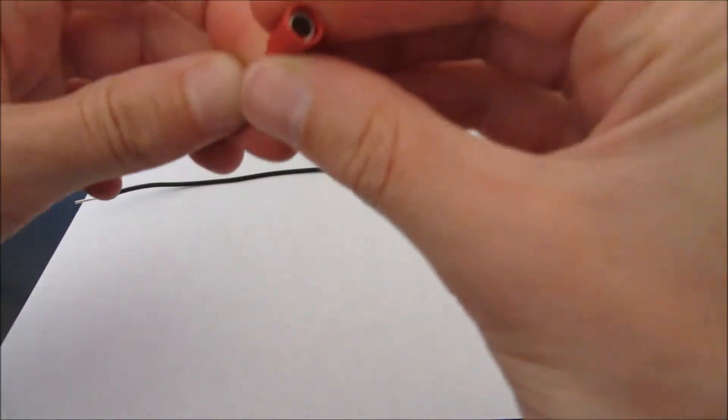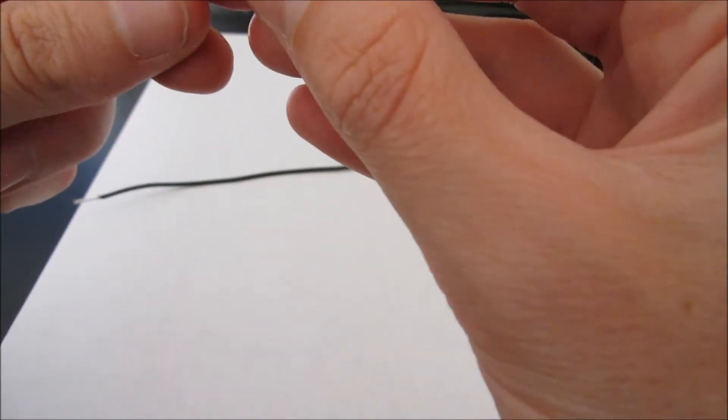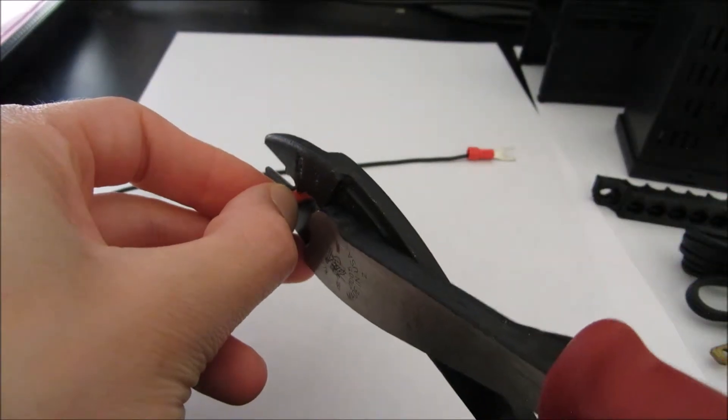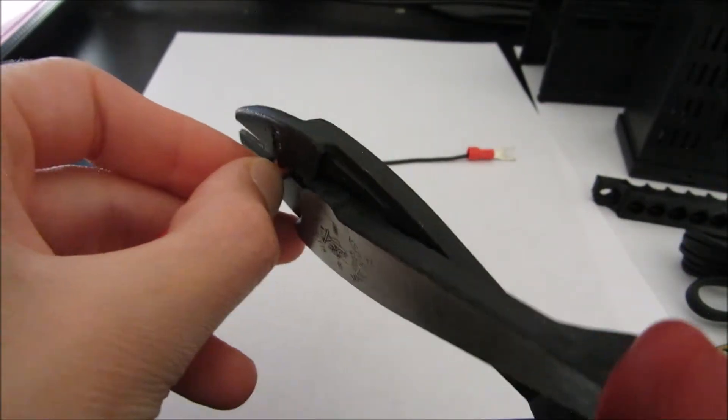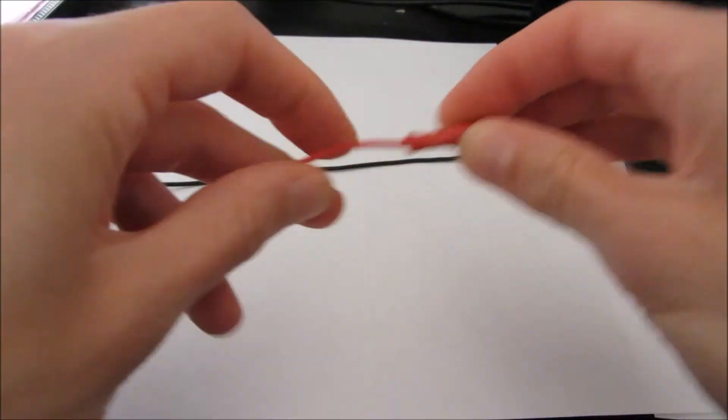So again, we don't want to push this all the way through. We want to check on the inside to make sure it's touching that little post on the inside and hold it in place and crimp it. Squeeze. And again, that should be snug.